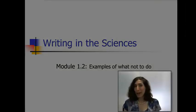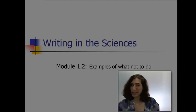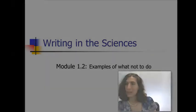So in the second module, I'm going to give you some examples, and we're going to kind of go through these examples. They're really just representative of what's out there in the scientific literature. They're also kind of examples of what not to do.